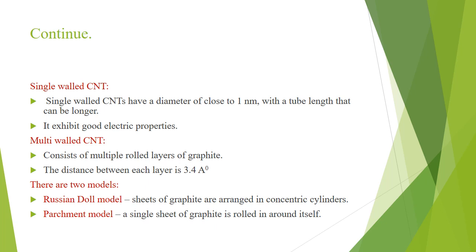There are two models in multi-walled itself. One is Russian doll model and another one is parchment model. In the Russian doll model, the sheets of graphite are arranged in concentric cylinders. In parchment model, a single sheet of graphite is rolled in around itself to form a parchment model multi-walled carbon nanotube.